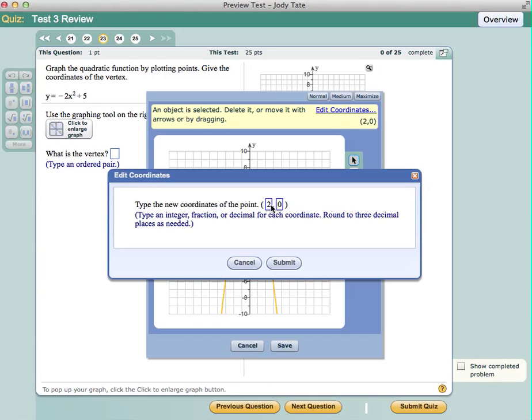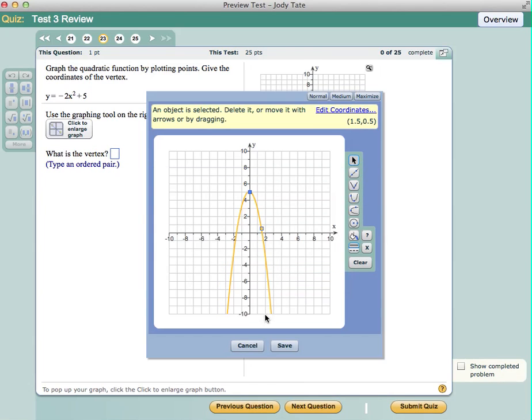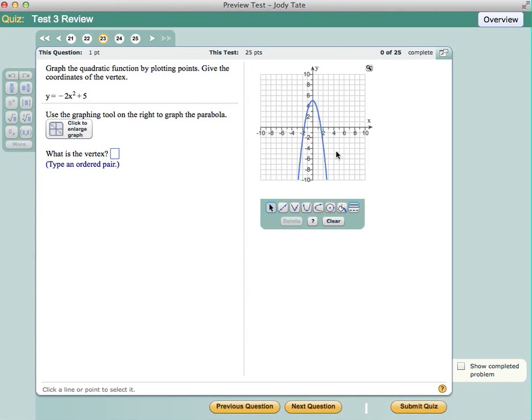And now I can type anything I want for my coordinates. So now I'm going to say 1.5. And then remember when x is 1.5, we solved and we got a y value of 0.5. So now I just submit and it changes it. And now I was able to plot a fractional coordinate. So click save and you're done.